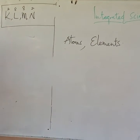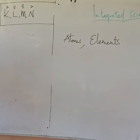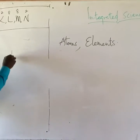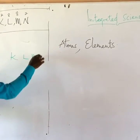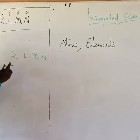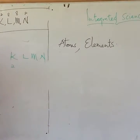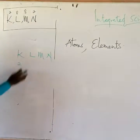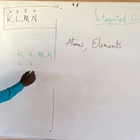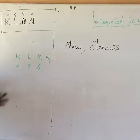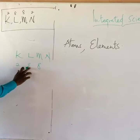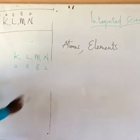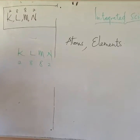Now for calcium, even before we draw, we can say that if we have K, L, M, N — K should take 2. 2 minus 20, you get 18 remaining. So this one will take a maximum of 8, and this one will take a maximum of 8. 2 plus 8 making 10, plus 8 making 18. Then the rest is 2. So this should be the arrangement for calcium's electronic configuration.